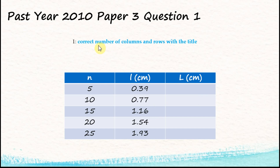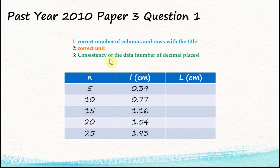Sometimes three marks are given for the table. One mark is for the correct number of columns and rows with the correct labels — in this case n, l, and capital L. The second mark is for correctly labeling the units. The third mark is for consistency of the data — all data in two decimal places for L — giving you three marks for the table.